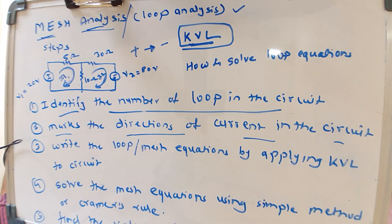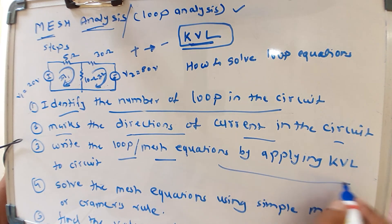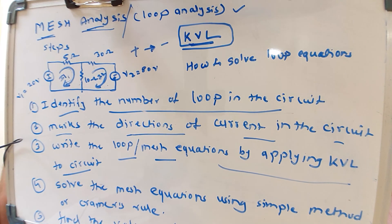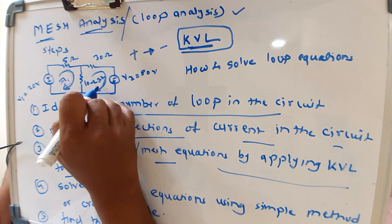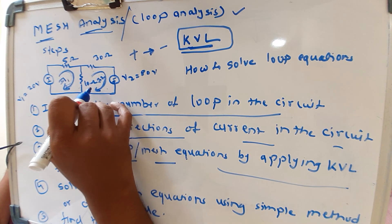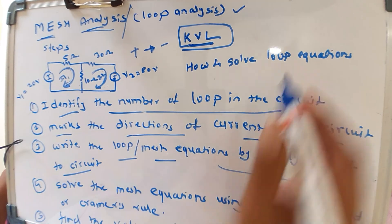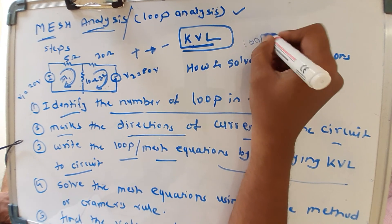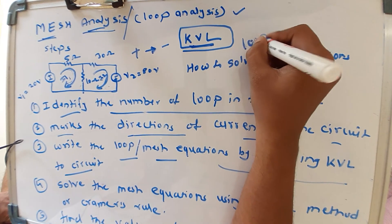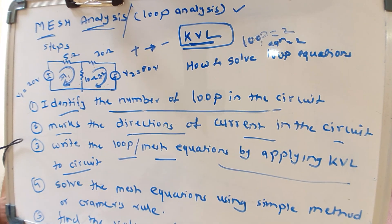After marking the current directions, we write the loop or mesh equations by applying KVL to the circuit. KVL is applied for each loop — first loop and second loop. Since there are two loops, there must be two equations. The number of equations must equal the number of loops.